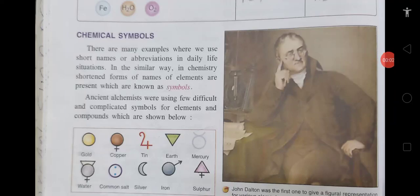Welcome children. This is my second video on atomic structure, that is chapter 4, first second part of it. The next topic we have to do is chemical symbol. There are many examples where we use short names or abbreviations in daily life situations. In the similar way, in chemistry shortened forms of the names of elements are present, which are known as symbols. For elements we write some short forms and we call them as symbols.